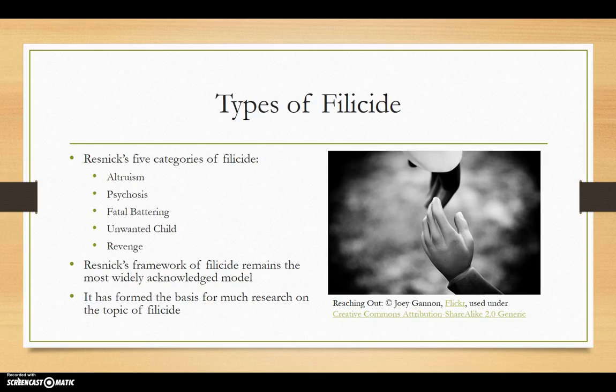Fatal battering, where the child is beaten to death — this category also includes negligence and domestic violence. Unwanted child, where the child is murdered because it is unwanted to begin with. This happens most often with unplanned pregnancies and when another relationship is impacted adversely by the presence of the child.